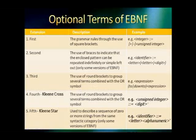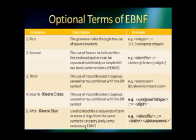The fourth extension is the Kleene cross, used to describe a sequence of one or more strings from the same syntactic category. The fifth extension is the Kleene star, used to describe a sequence of zero or more strings from the same syntactic category.